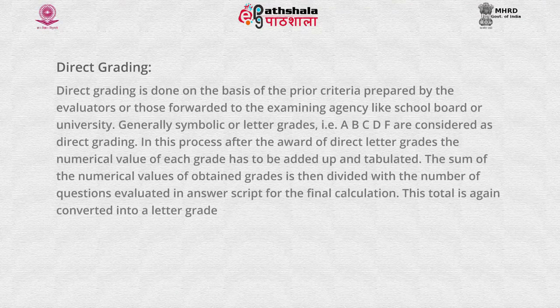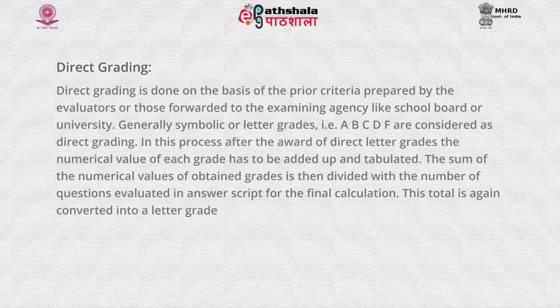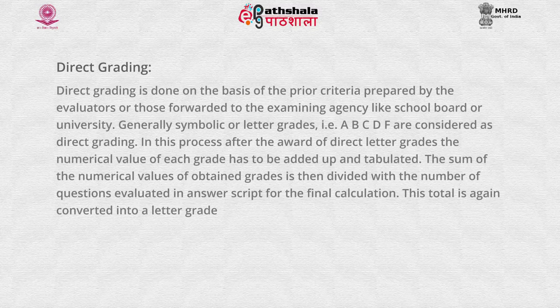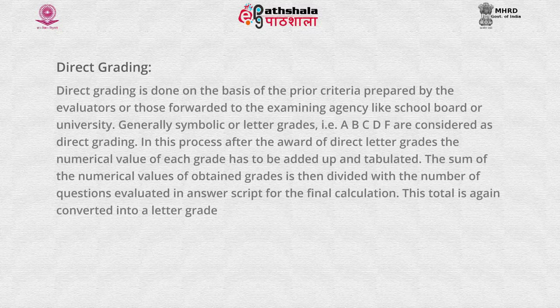Another way of grading is direct grading. Direct grading is done on the basis of prior criteria prepared by the evaluator or by an agency like a school board or university. Generally, symbolic or letter grades — A, B, C, D, F — are considered as direct grading. After awarding direct letter grades, the numerical value of each grade is added up and tabulated, then divided by the number of questions evaluated for the final calculation.